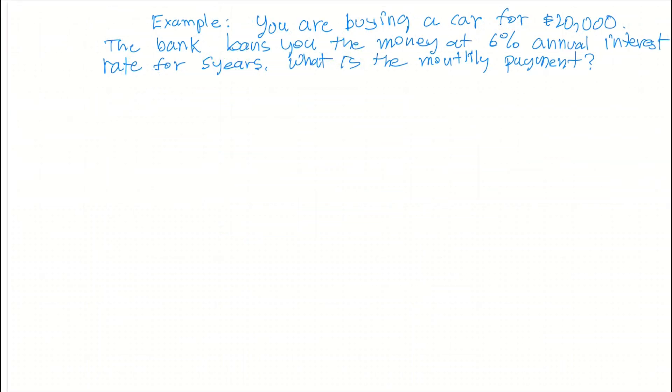Now let's look at an example. What we want to do is calculate - we've got this loan here. You're buying a car for $20,000. The bank loans you the money at 6% annual interest rate for 5 years. What is your monthly payment?